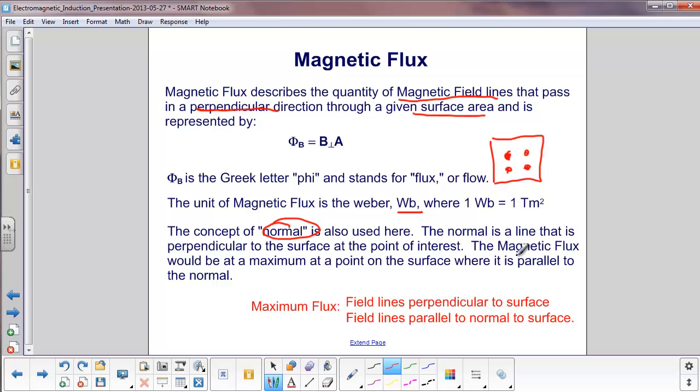The magnetic flux would be maximum where it is parallel to the normal. Please don't get tripped up with the perpendicular and parallel terms. The normal would be perpendicular to the surface. Here's a normal line coming out of the board. The normal is perpendicular. The magnetic field lines here are perpendicular to the surface, but the normal is parallel to the field lines.